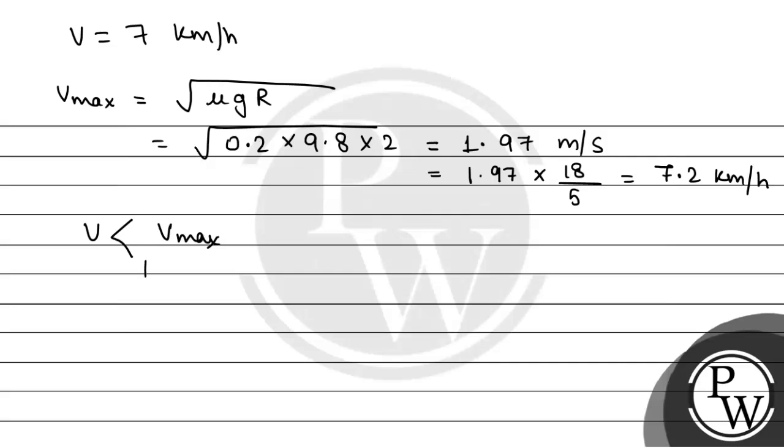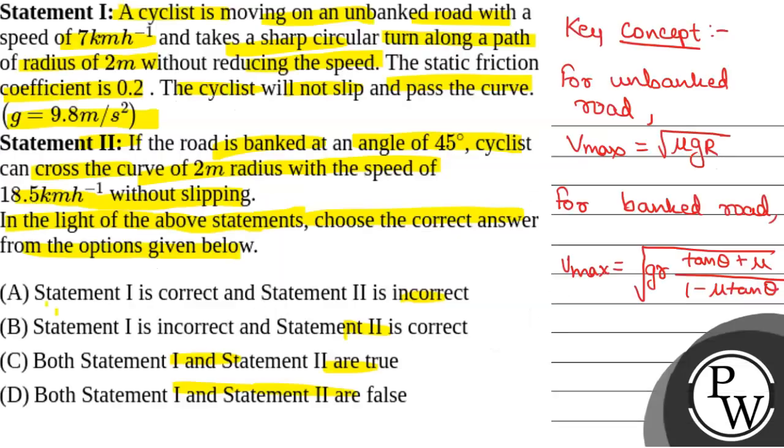So the cyclist can turn safely. So this is for Statement 1, the cyclist can turn safely. So this statement is true.